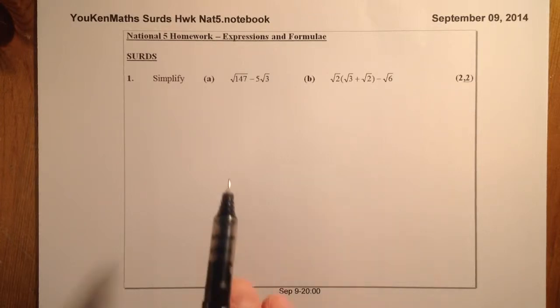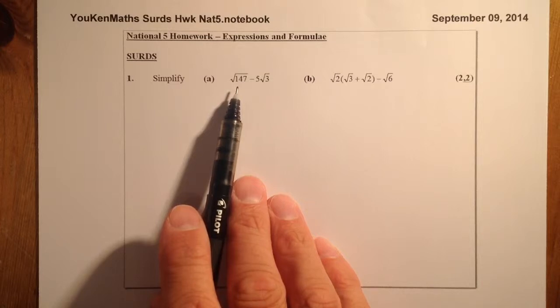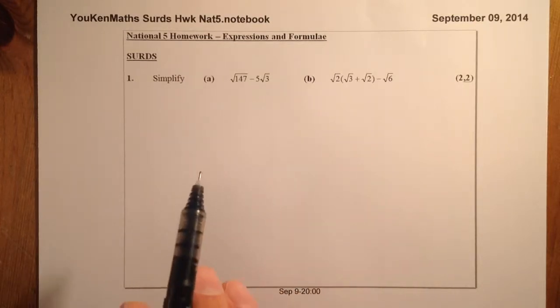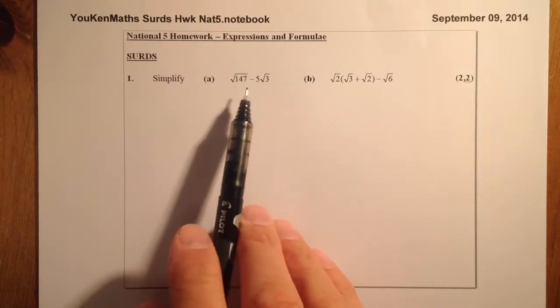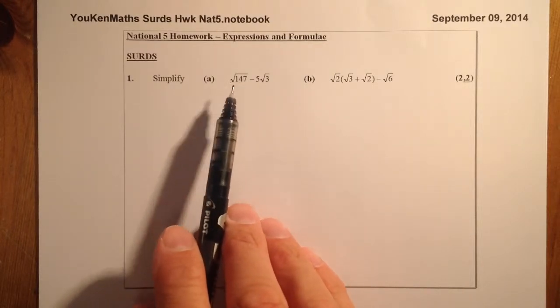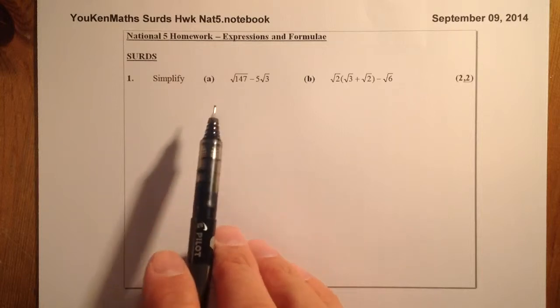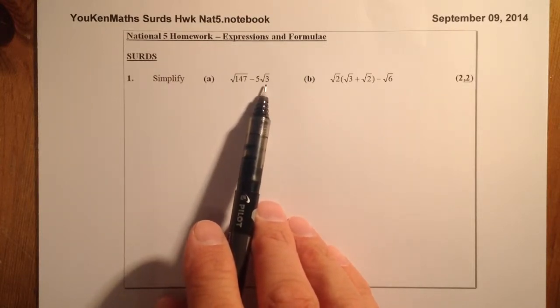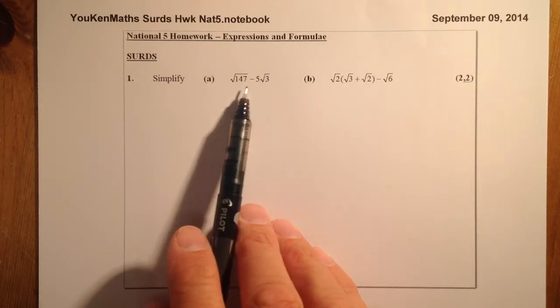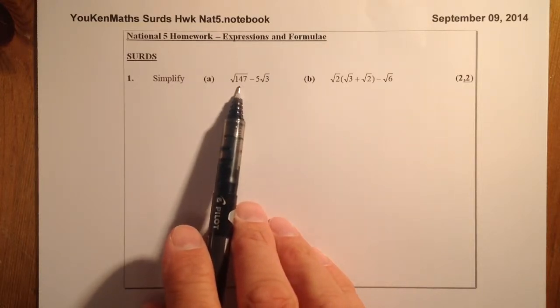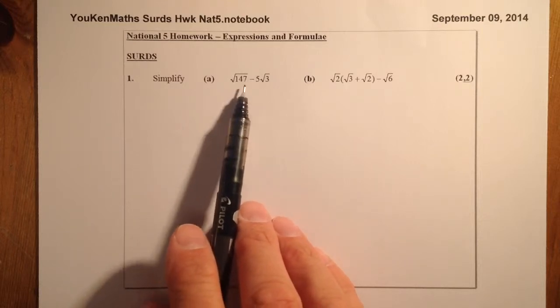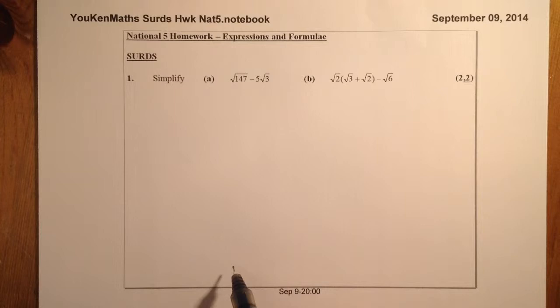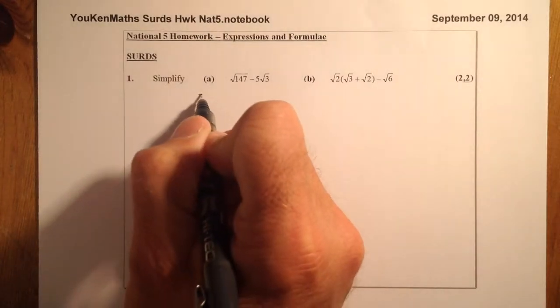So first one here, we're going to simplify. Simplify root 147 subtracting 5 root 3. So usually what we're looking for here is we're trying to get the surds with a square number multiplied by another number. Sometimes when you get a question like this, the clue there would probably be a root 3 would probably work with this one here. So root 3 times another number would give us root 147. So actually that's the way we're going to go ahead and do this one.